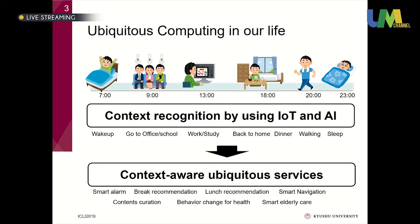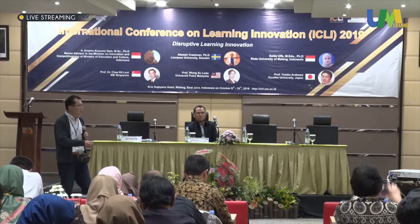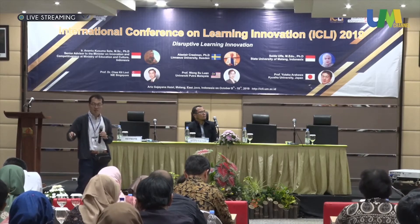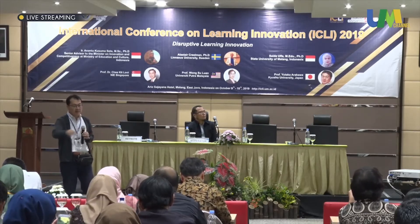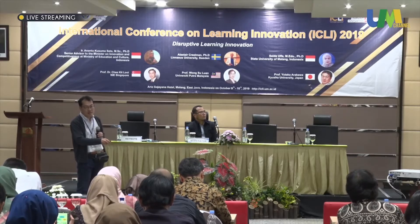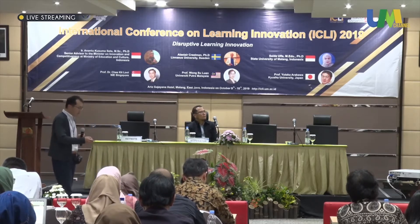We consider the education environment and the working environment to be good places to experiment with such technologies. Ubiquitous computing consists of three areas: first, collecting data from the actual world by deploying sensors — in chairs, vehicles, or city environments. That data goes into machine learning or data analysis, which then leads to application or service development, and feedback to the real world. This is essentially a cyber-physical system.